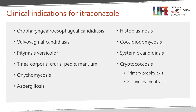Itraconazole indications include vulvovaginal candidiasis, pityriasis versicolor, tinea corporis, cruris, pedis, and manuum. Its indication is increasing because of terbinafine resistance, onychomycosis, and various forms of aspergillosis — both chronic and allergic. For other systemic infections it's indicated for histoplasmosis and coccidioidomycosis. It has a license for systemic candidiasis and is also used for cryptococcosis as primary or secondary prophylaxis, particularly if patients are at risk of histoplasmosis or have a dual or triple infection.